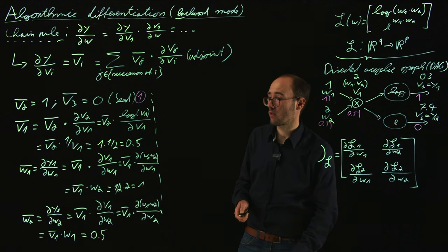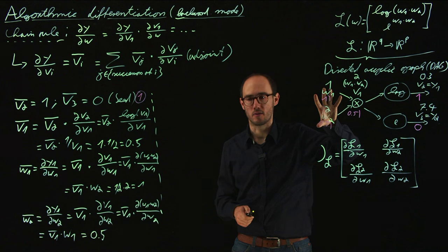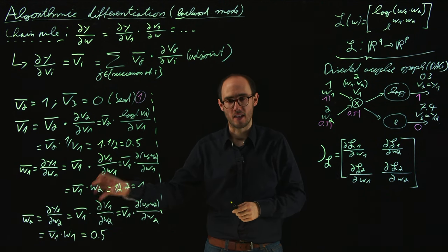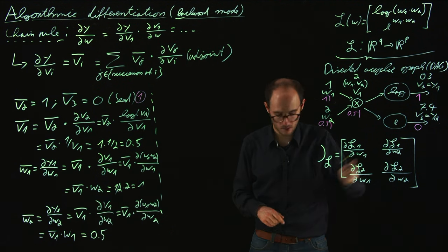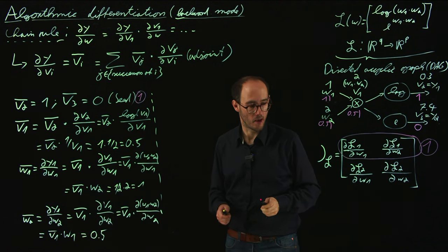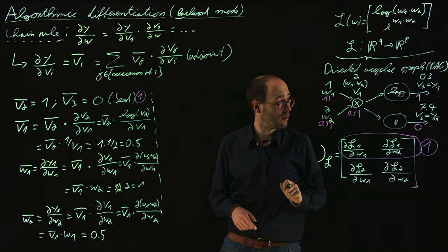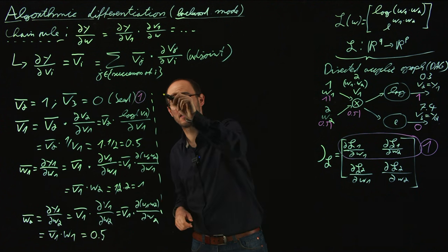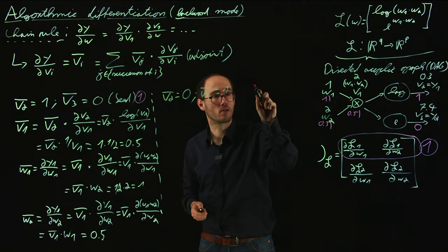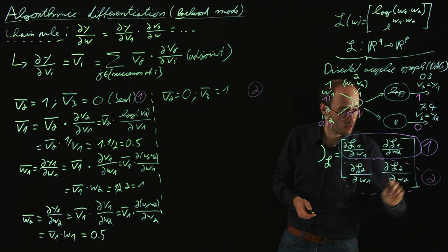So what have we calculated with these adjoints? We have done a backward pass from the first output to all inputs. With one backward pass through the DAG, we have calculated the sensitivities — the partial derivatives of that specific output with respect to all inputs. That means we have calculated one row of our Jacobian matrix with that seeding. We can now do the same for the second output y2. In this case we change the seeding: set v2 bar to 0 and v3 bar to 1. This is seed 2, which will give us the second row of the Jacobian matrix.